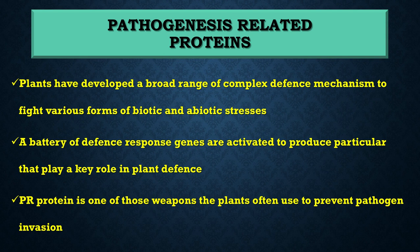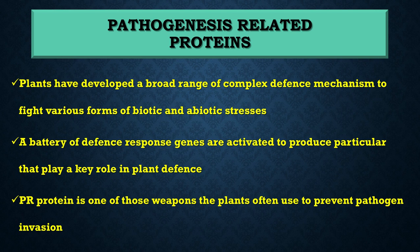To overcome these adversities, they will keep some kind of weapons ready to fight back and defend themselves. Plants have developed a broad range of complex defense mechanisms to fight various forms of biotic and abiotic stresses. To fight these stresses, they will activate a battery of genes. These genes will encode defense-related proteins, which will in turn activate effectors and receptors that all take part in their defense mechanism. These pathogenesis-related proteins are part of their innate immune system.